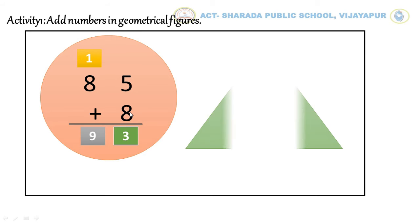Next geometrical figure is triangle. In this triangle, we have a 2 digit number without carryover problem. Let's start adding. 4 plus 4 is equal to 8 in 1's place. In 10's place, there is no carryover. So, we write 1 as it is. Our answer is 18.